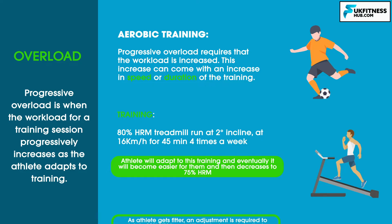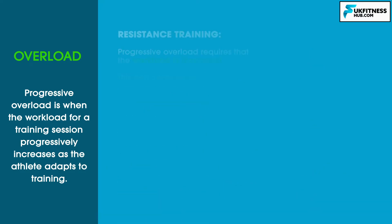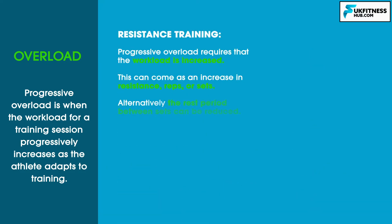As the client gets fitter, this requires an adjustment in training so that training is still at 80% of their heart rate max and still producing the stress needed to cause further adaptation. For example, increasing the speed to get the client back to 80% of their heart rate max would be an example of progressive overload. For resistance training, progressive overload also requires that the workload is increased. The increase can come from an increase in resistance, repetitions, or sets.